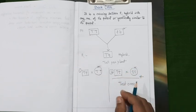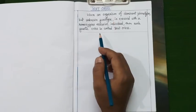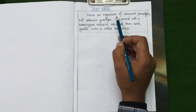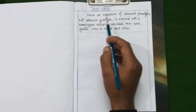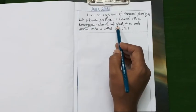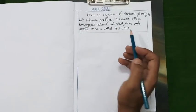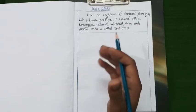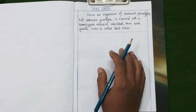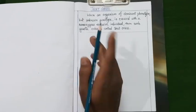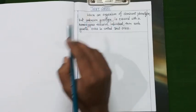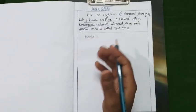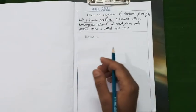Now let's look at test cross in detail, starting with its definition. When an organism of dominant phenotype but unknown genotype is crossed with a homozygous recessive individual, such a genetic cross is called a test cross. It is not just a simple type of back cross — it is a useful tool in genetics to identify an unknown genotype. This technique was first developed by Mendel to predict the exact genotype of any phenotypically dominant organism.